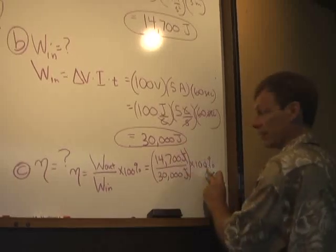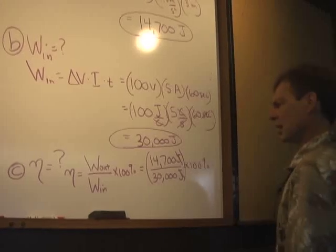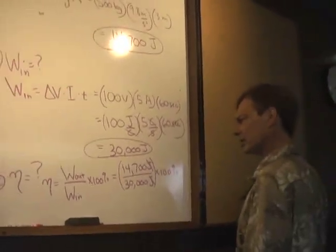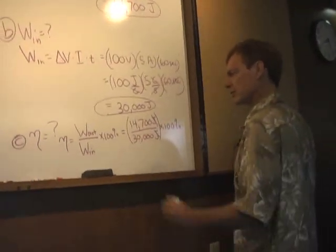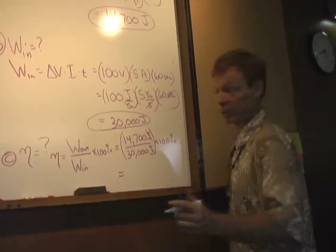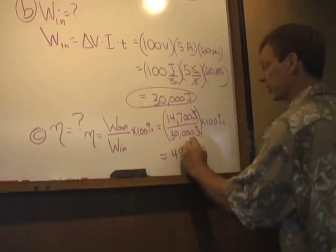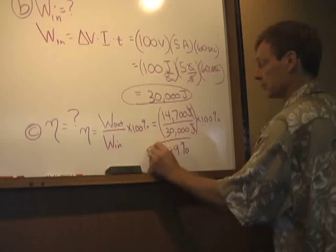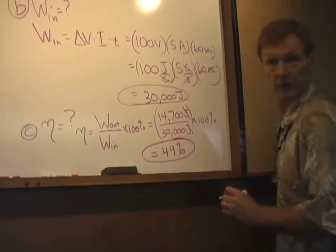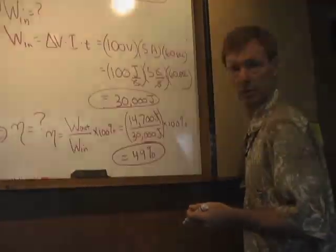And the joules cancel, so I'll be left with a percent. And so I'm going to be running roughly, let's see. Now you check this out. This is going to be an approximation, but it should be pretty close. About 49% efficiency, all right? So that's electrical work.